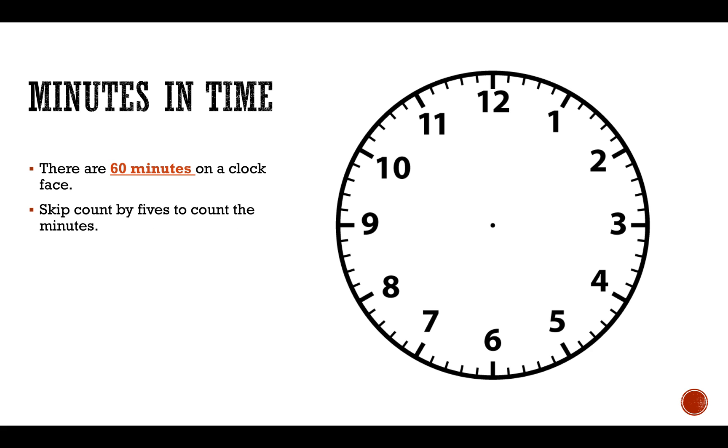Skip count by fives to count the minutes. When you skip count, you should always start at 12, but instead of saying zero, you should say O'clock.